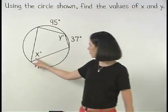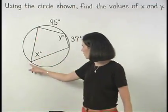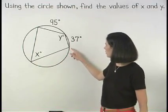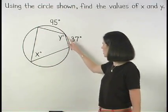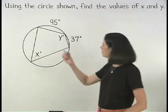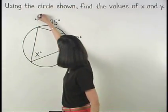Notice that x represents the measure of an inscribed angle, so we know that it equals half the measure of the intercepted arc, which is the arc shown here.